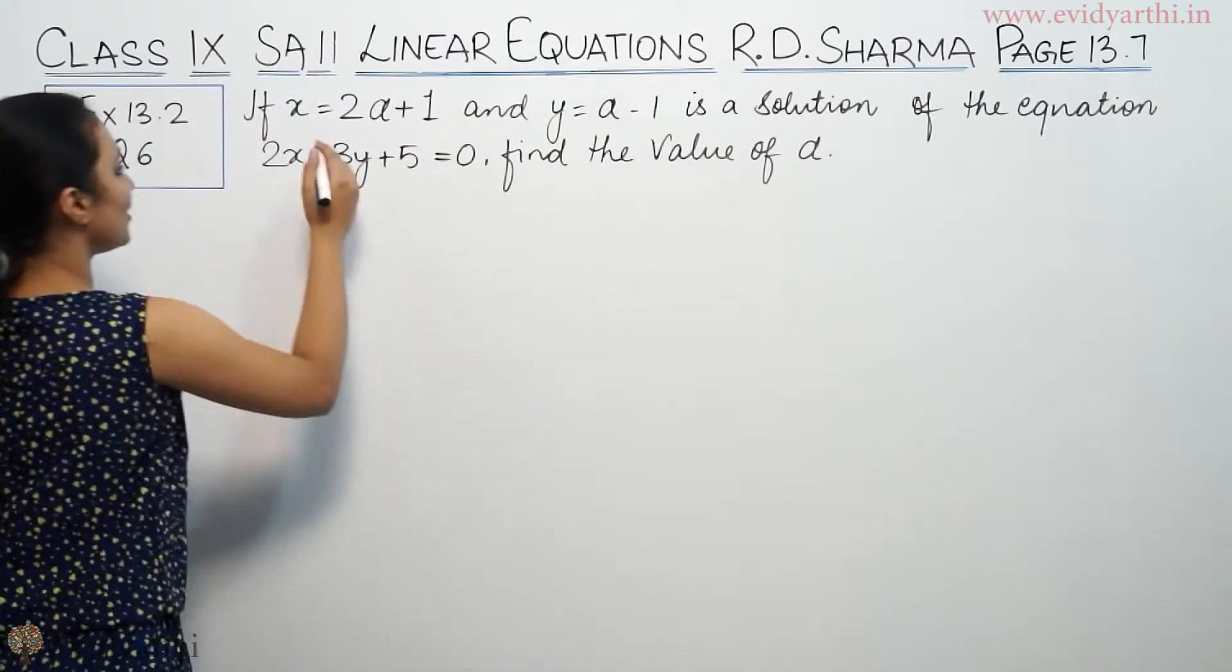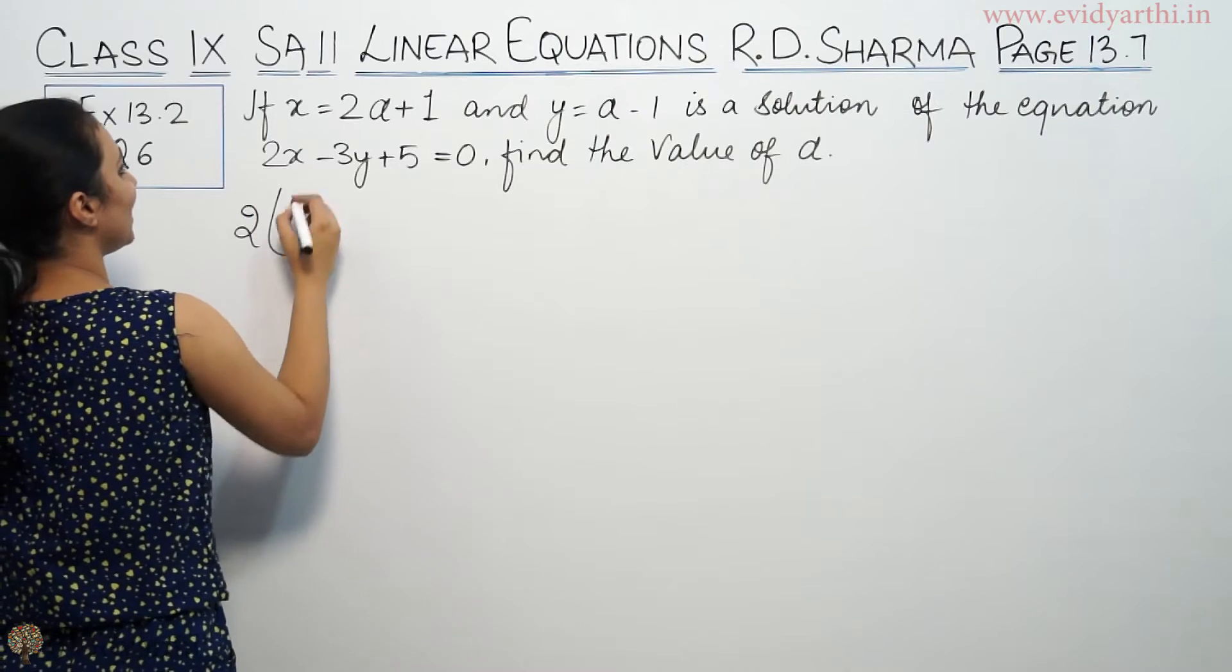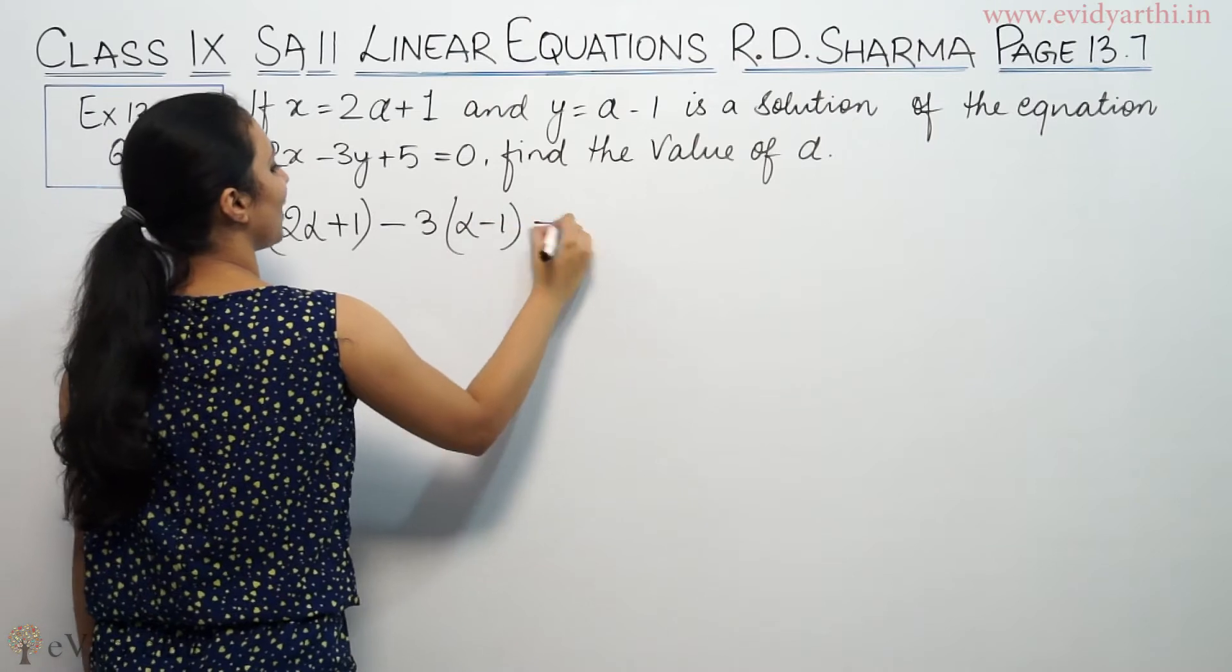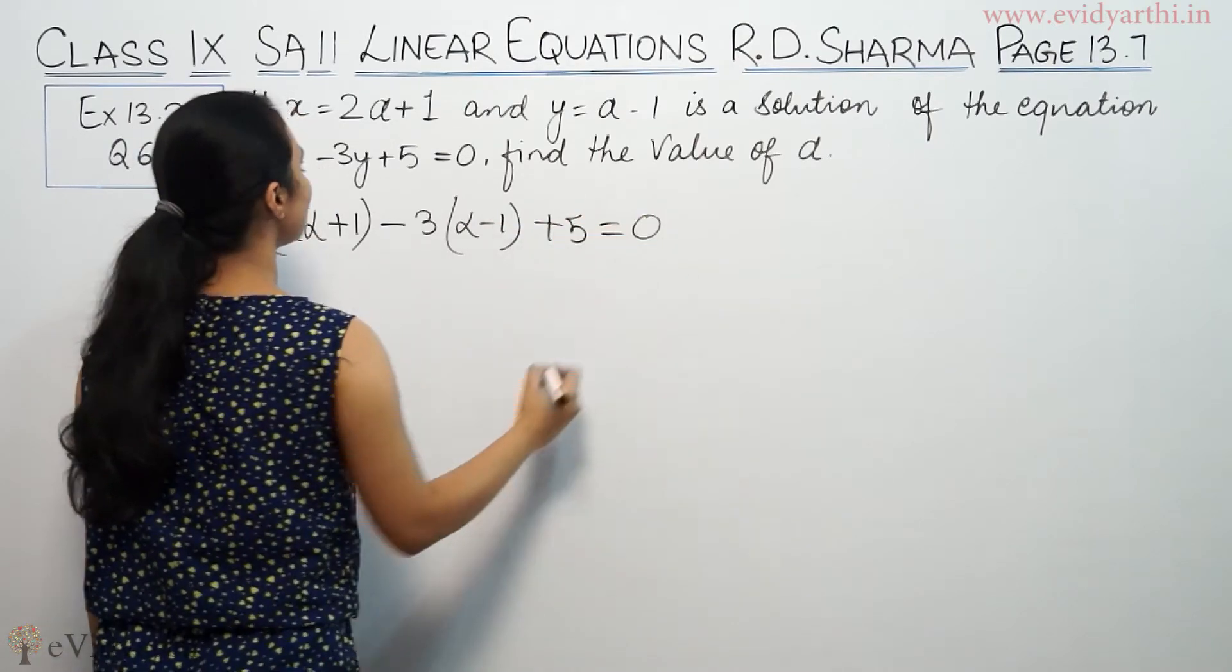So can you find alpha? We will substitute the values in this equation. We have 2 times (2 alpha plus 1) minus 3 times (alpha minus 1) plus 5 equals 0.